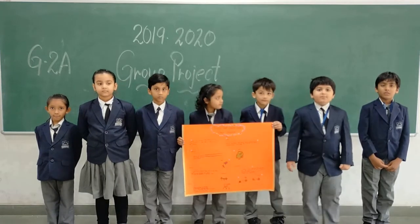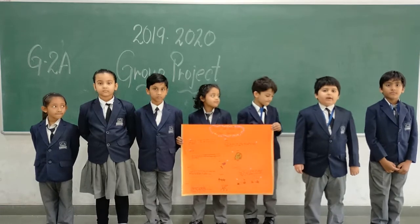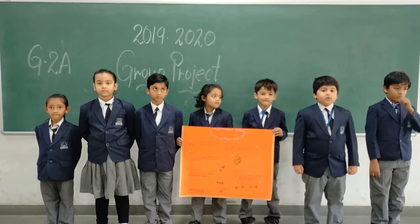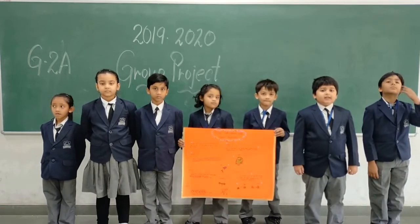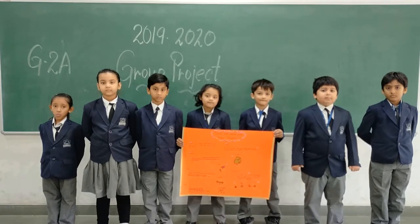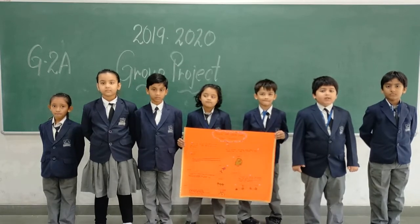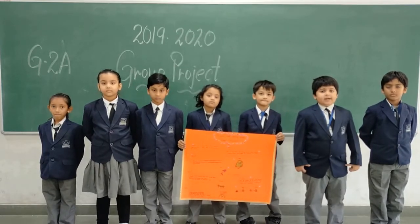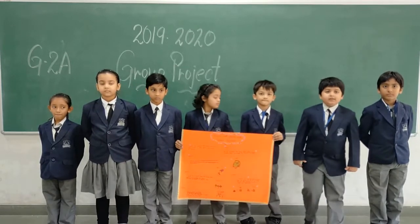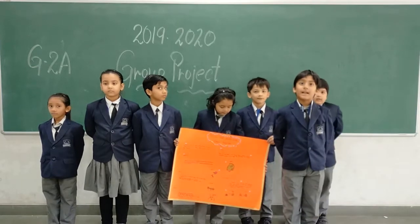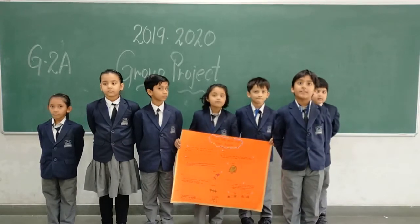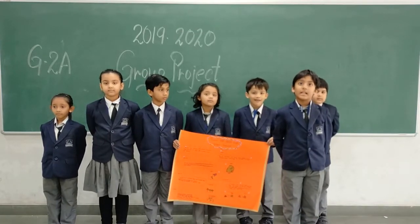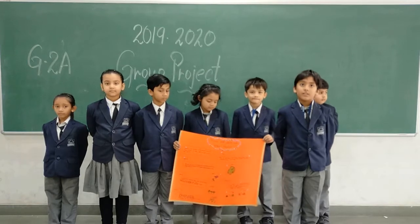Creepers are plants that spread along the surface of the soil. Examples of creepers are watermelon and pumpkin. Climbers are plants with weak stems. They wrap themselves around other plants for support.